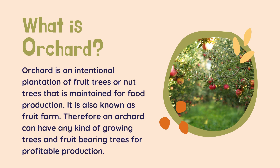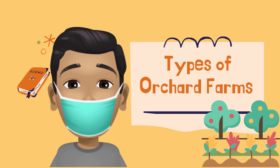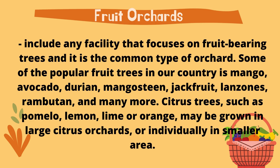An orchard is an intentional plantation of fruit trees or nut trees that is maintained for food production. It is also known as a fruit farm. Therefore, an orchard can have any kind of growing trees and fruit bearing trees for profitable production. Here are the types of orchard farms.